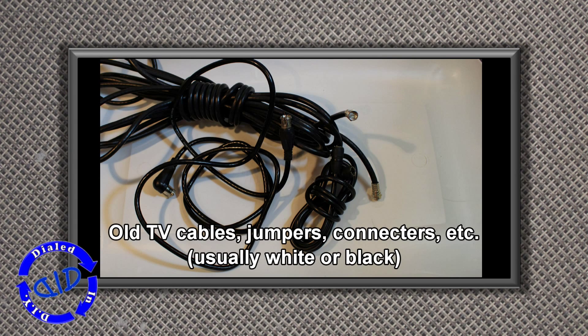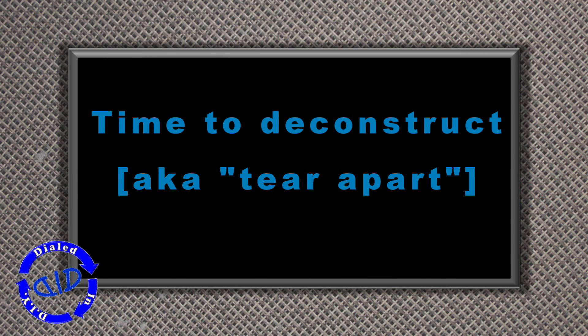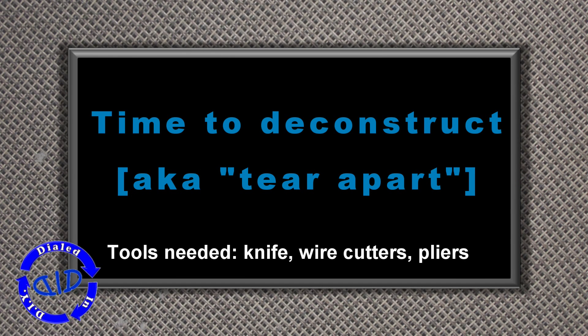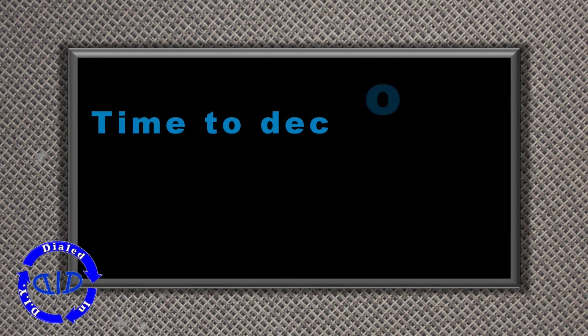You can take the jumpers, the connectors - sometimes they're white, sometimes they're black - and start cutting into them to get some good parts. All you need is a knife, some wire cutters, and pliers, and you're good to go.